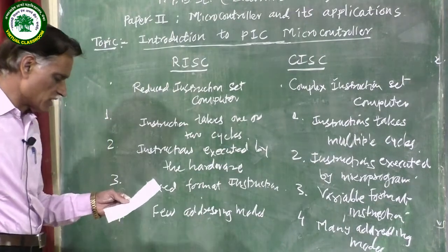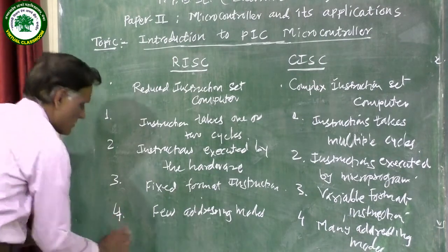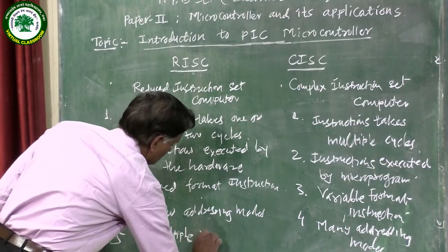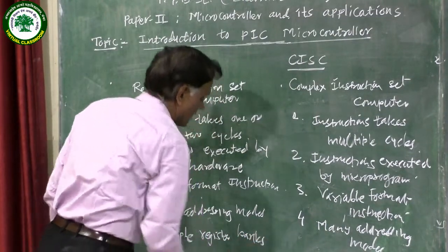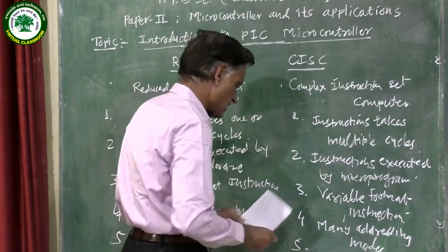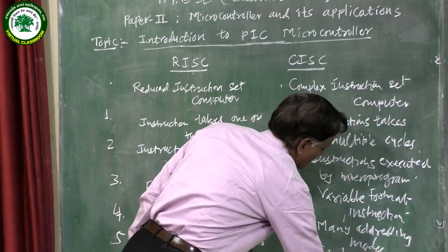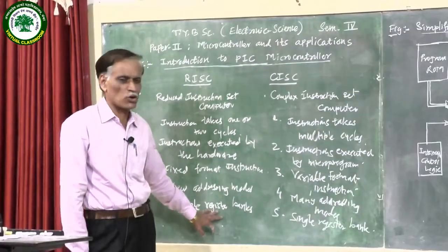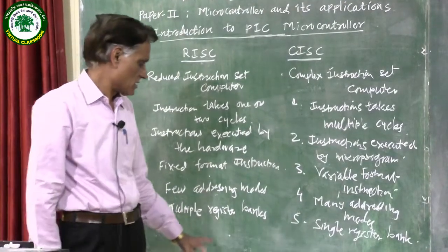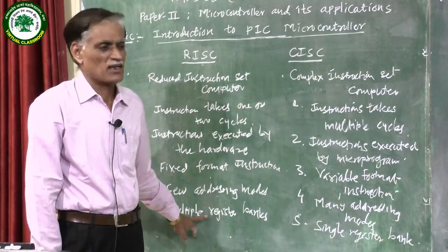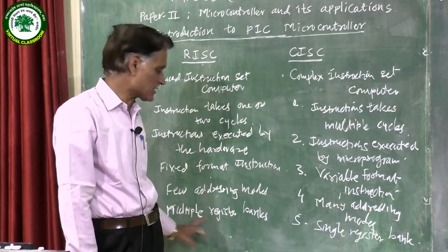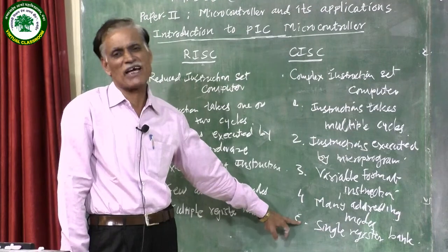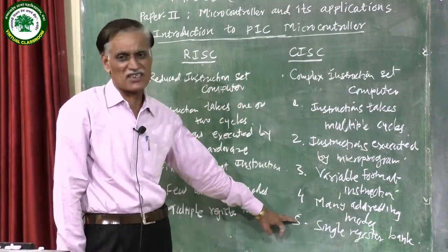The fifth point for comparison is that RISC architecture uses multiple register banks, while CISC uses a single register bank. The registers are located inside the microcontroller chip, that is, inside the CPU. As you increase the number of registers, data is always available for the CPU for processing. Therefore, multiple register banks help increase execution speed. In CISC architecture, a single register bank means a limited number of internal registers, which decreases the speed of operations.